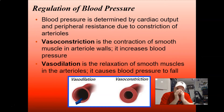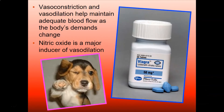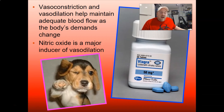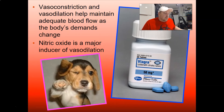Vasodilation opens that hole back up so blood can flow more easily. Vasoconstriction and dilation help maintain adequate blood flow as the body's demands change. For example, nitric oxide from things you ingest can be an inducer of vasodilation. And you've probably heard of Viagra — it's a phosphodiesterase inhibitor. Cells need communication to stop, and that's called PDE. Viagra stops this compound from stopping a conversation, allowing more blood flow into the penis, leading to erections.